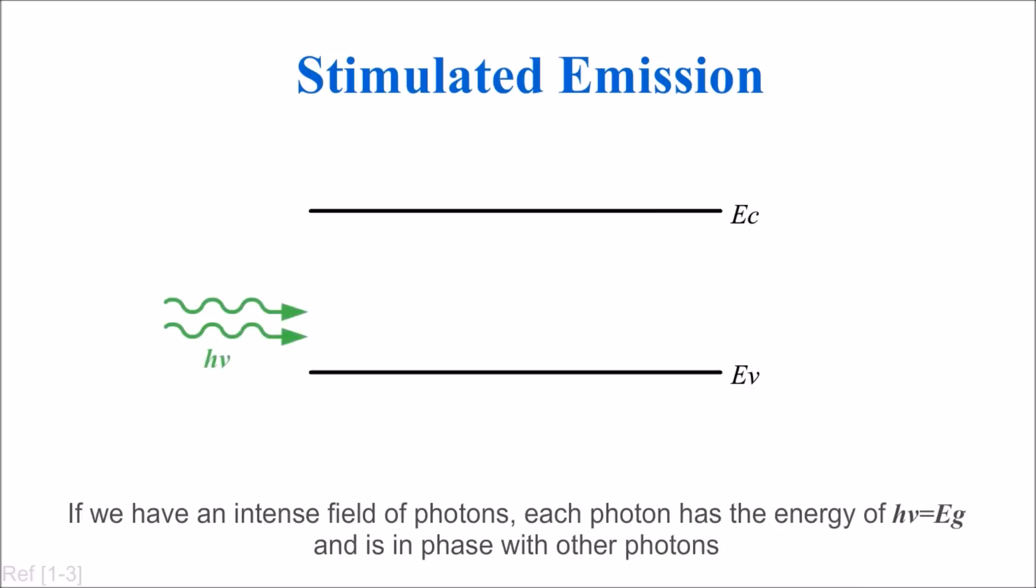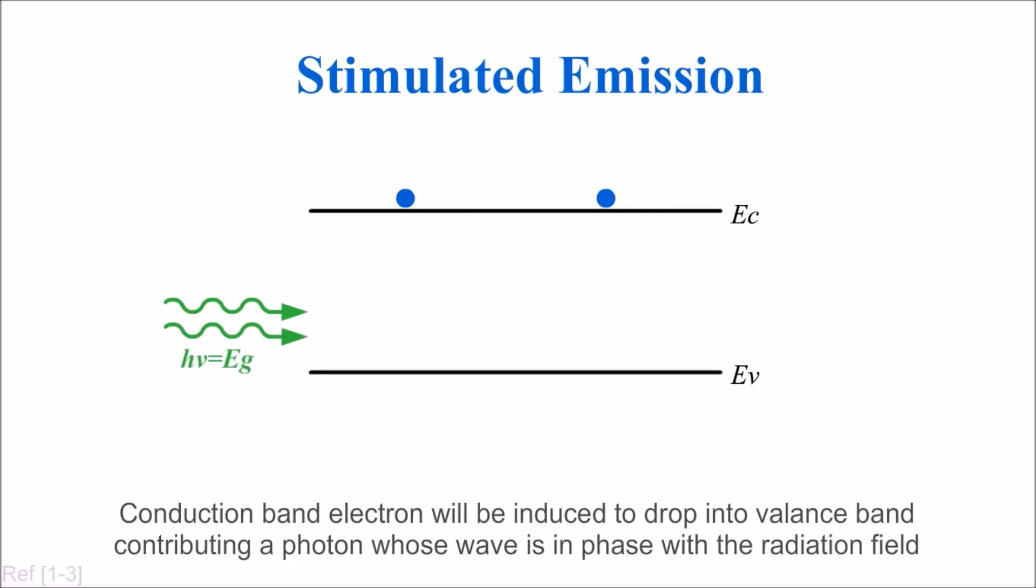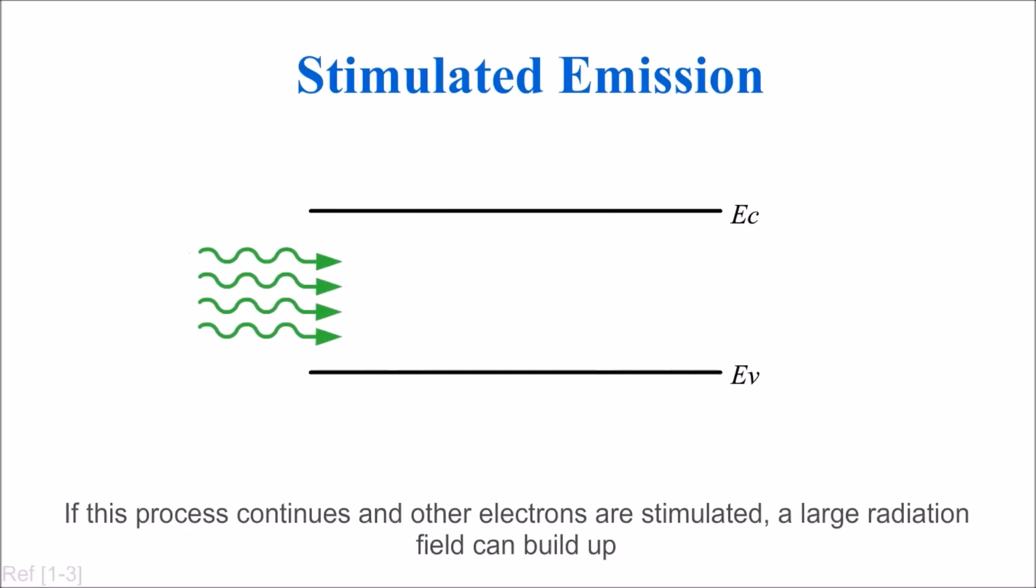If we have an intense field of photons, each photon has the energy hν equal to Eg and is in phase with other photons. Conduction band electrons will be induced to drop into the valence band, contributing a photon whose wave is in phase with the radiation field. If this process continues, a large radiation field can build up.